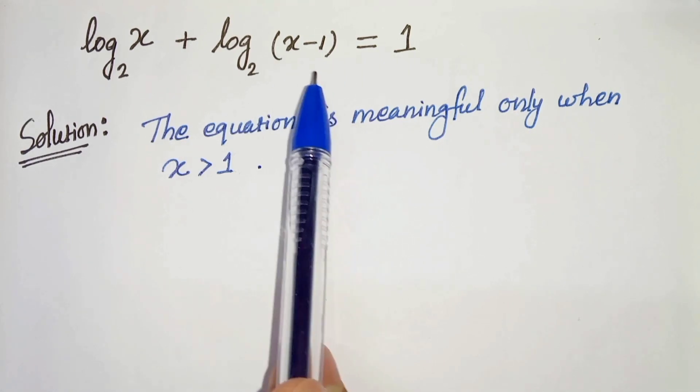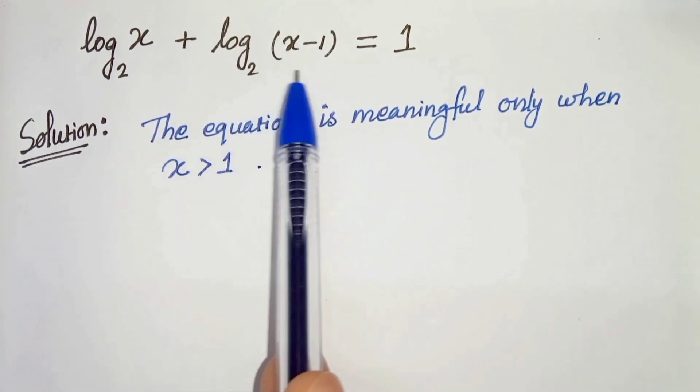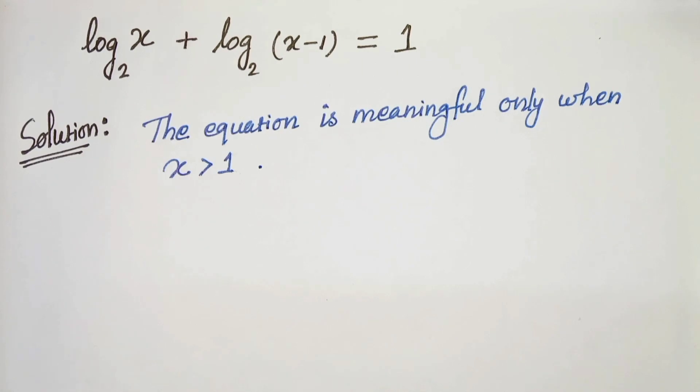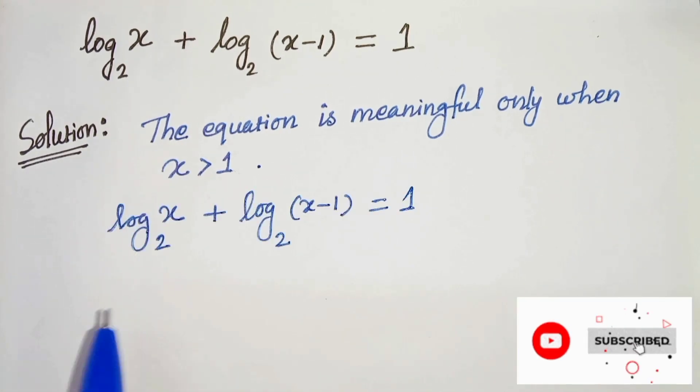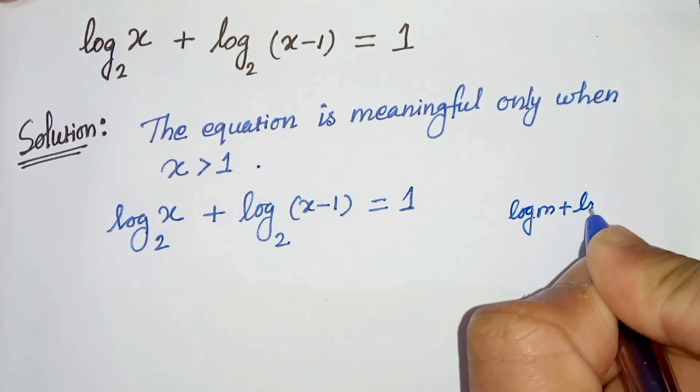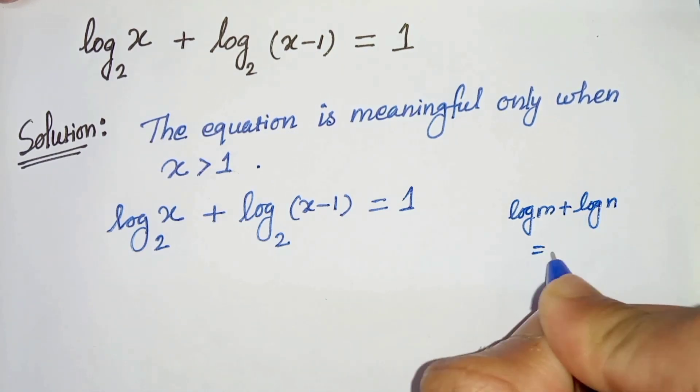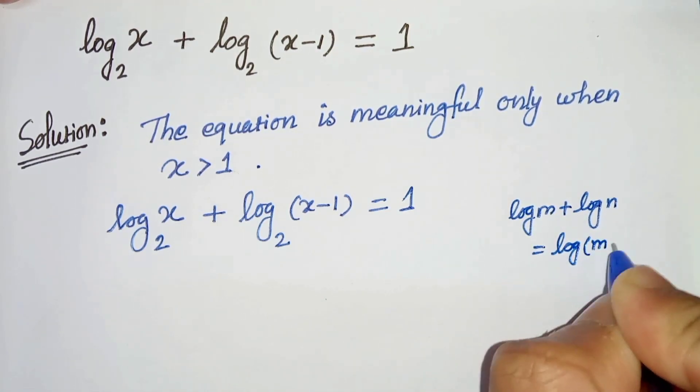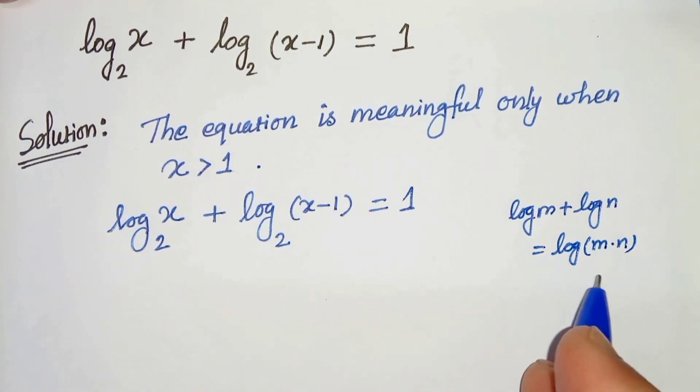So we are given log x plus log x minus 1 equals to 1. We know that log m plus log n can be written as log of m times n. From this we can write log of x times x minus 1 with the base as 2 equals to 1.